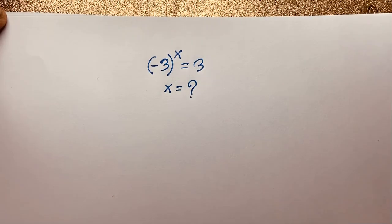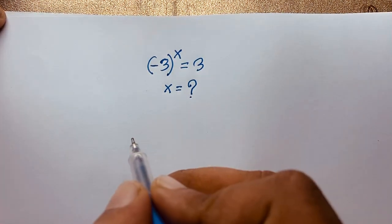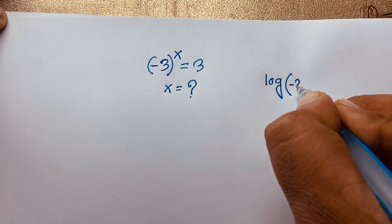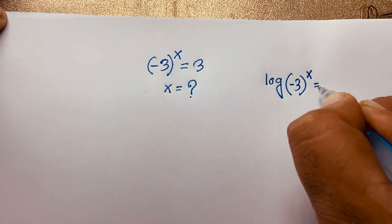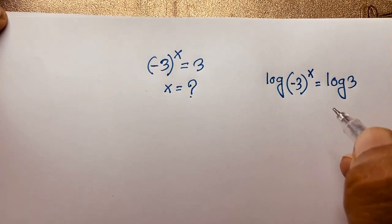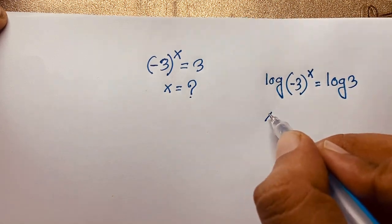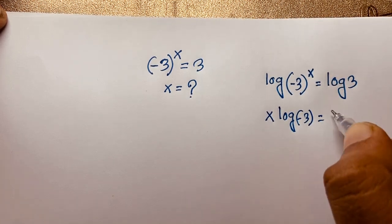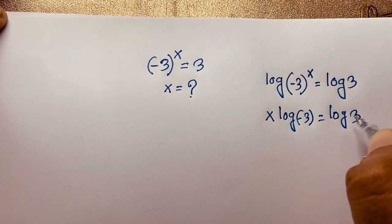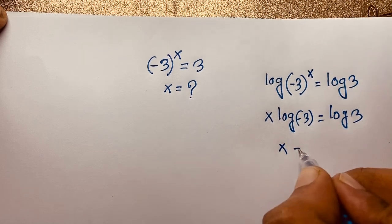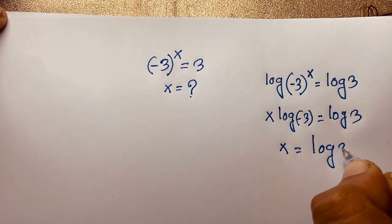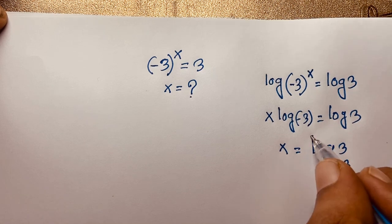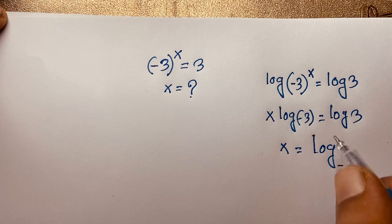So how to solve this question? First of all, if you apply log to both sides, you can say log of minus 3 to the power of x is equal to log 3. Then you can move x in front, so it will be x log(minus 3) is equal to log 3. Then if I divide both sides by log(minus 3), I can say that x is equal to log 3 base minus 3. So at this moment, we find an answer, but it is not a real solution — there is no real solution here.